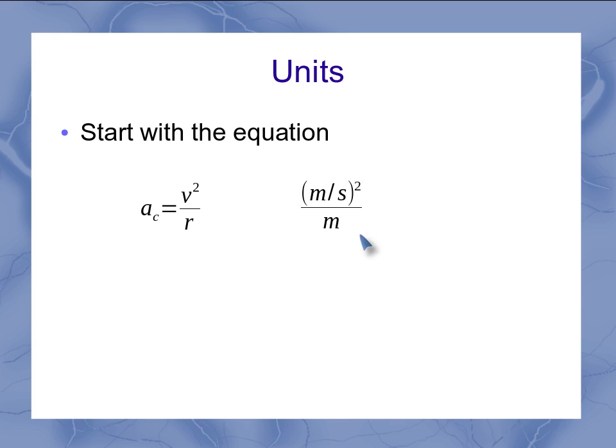Now the other way I can write this here is to list my meters per second squared, and then my 1 over meters as separate quantities. And then it's really easy to see that one of those meters cancel, leaving me with just meters per second squared.